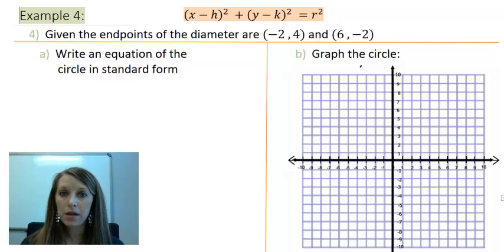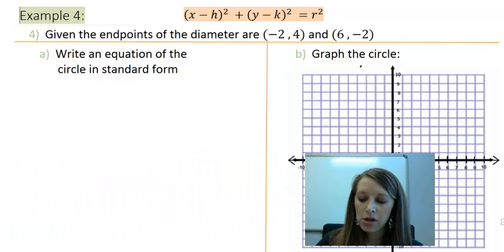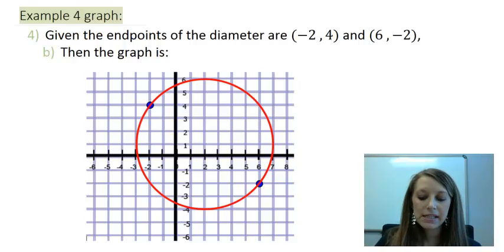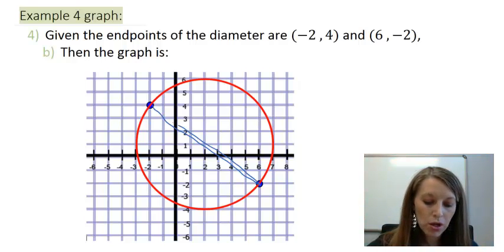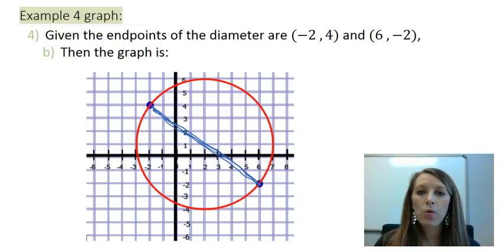I'm actually going to do part B before I do part A, so you can actually see what we are trying to come up with here. And I have this already graphed for you. I have my two endpoints: (-2, 4) is this point up here on the top left, and (6, -2) is this point here on the bottom right. And those two points together give me the diameter, which is the distance all the way across my circle. So now you can visualize what it is actually trying to give us and what we should be doing to come up with the equation of the circle.